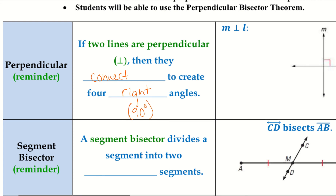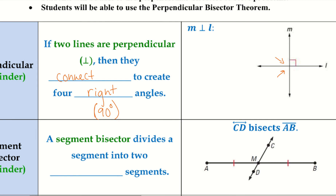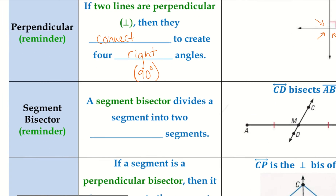So 90 degrees for right angles means all four of these angles — even the ones that the box is not drawn on — are also 90-degree angles. If you were to draw them all, it just kind of looks like one big box. Normally there's just one box drawn, but all four of those are 90 degrees.